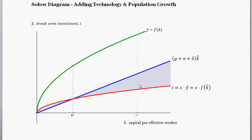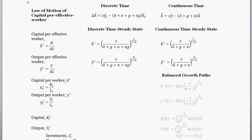In a previous couple of videos, we went through the nitty-gritty details of the model when we add in technology — labor-augmented technology — and population growth, and found steady state levels of capital per effective worker. So now we're going to talk about how that changes the Solow diagram and how that changes our shocks to the model and interpretation of the model. Before we get to drawing the diagram, we should review what our conclusions were of the Solow model with technology and population growth.